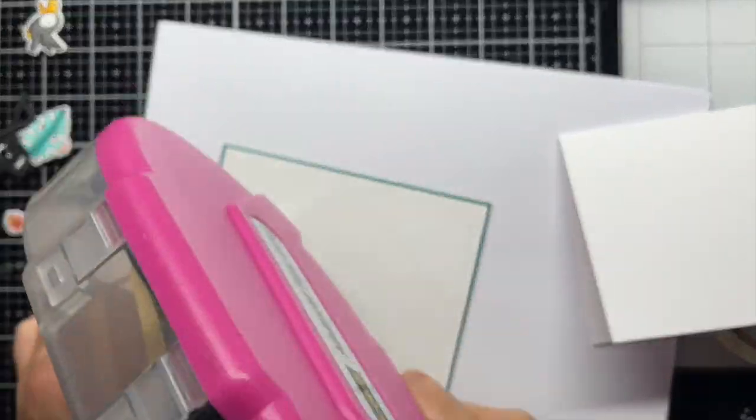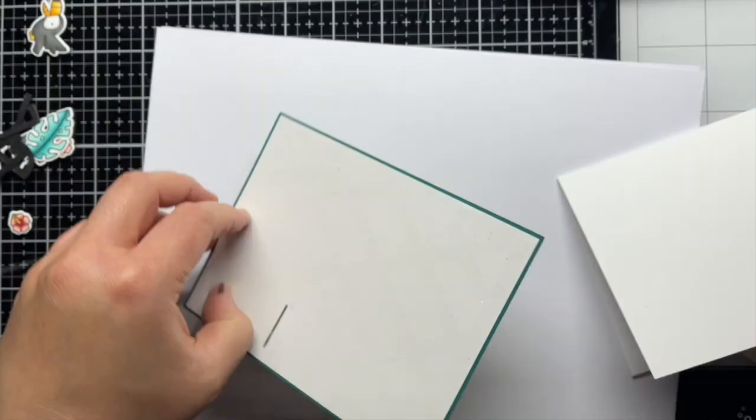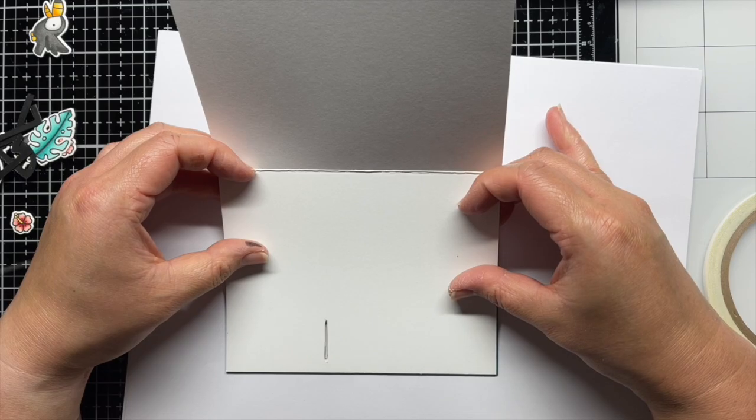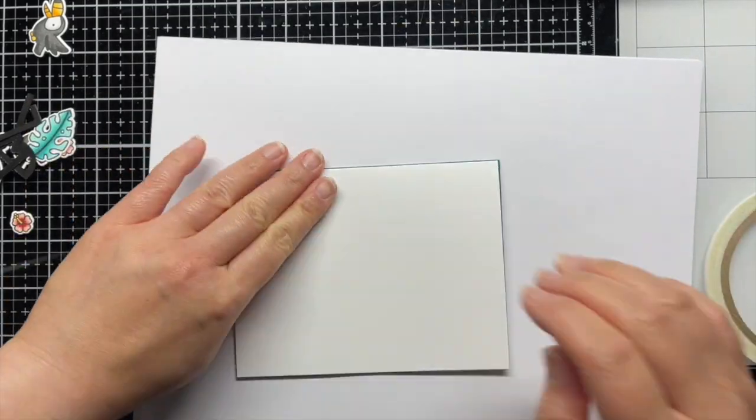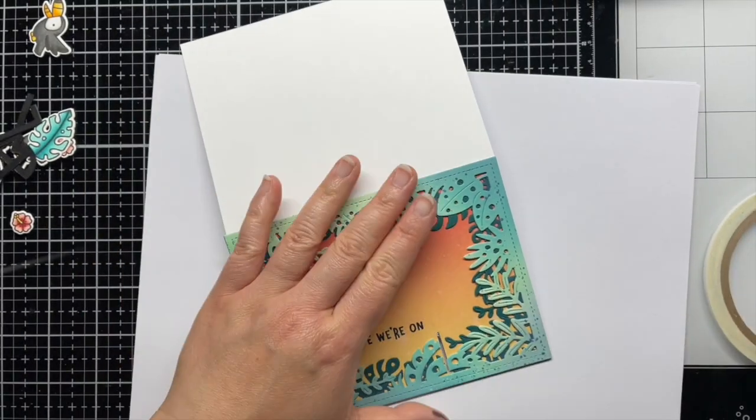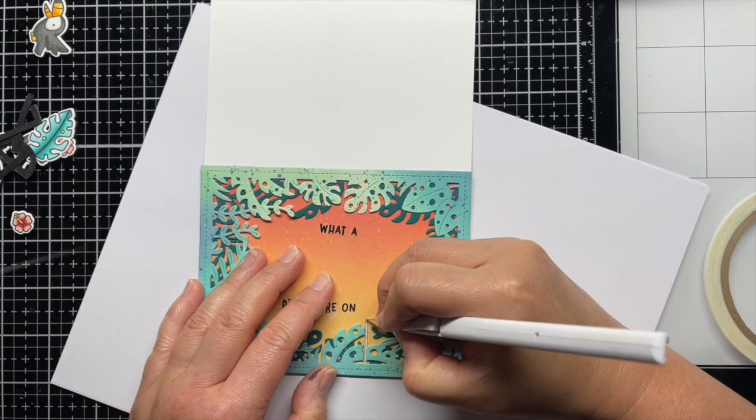Now it's time to start putting it all together. Off camera I stamped part of the sentiment from 2 Can Do It onto my background panel and adhere the tropical leaves backdrop. Then I placed my panel onto a card base and traced the opening I cut from my tab. I used my craft knife to cut an identical opening on the top of the card base and then I adhered the card base to the panel.